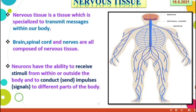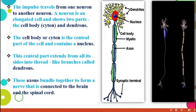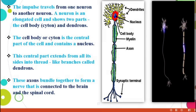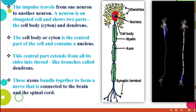Neurons have the ability to receive stimuli from within or outside the body. For example, if we touch a hot object accidentally, we first receive that heat stimulus. Then the neurons conduct and send impulses or signals to different parts of the body — the particular organ sends a message, and finally we remove the hand. The impulse travels from one neuron to another neuron.